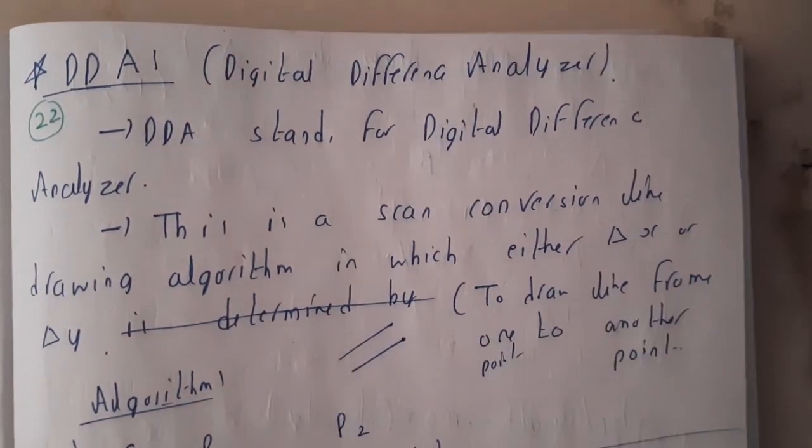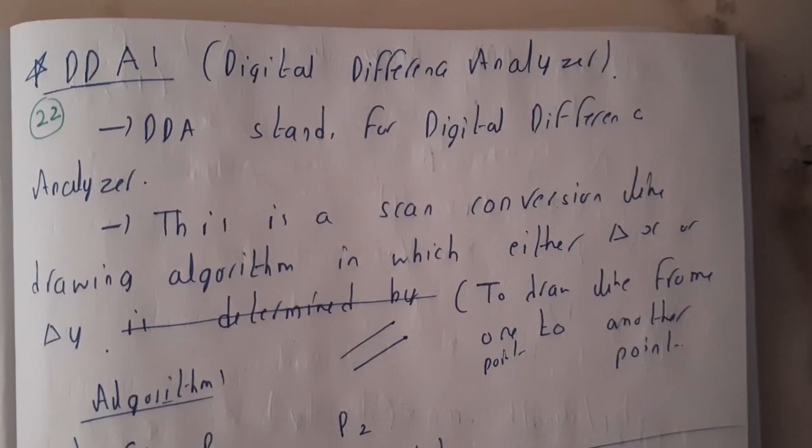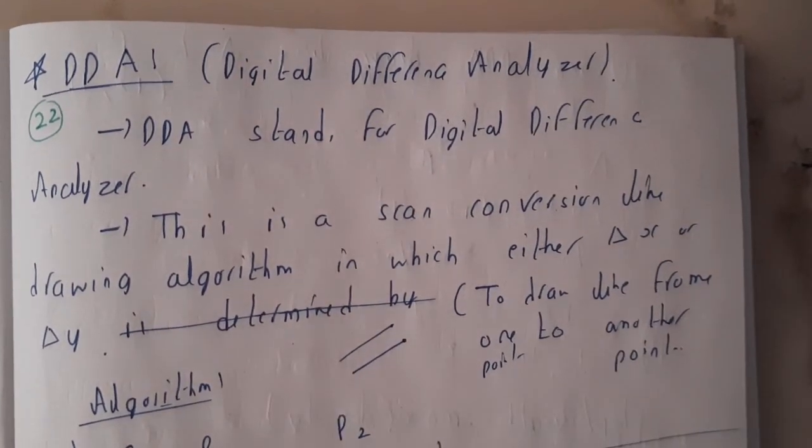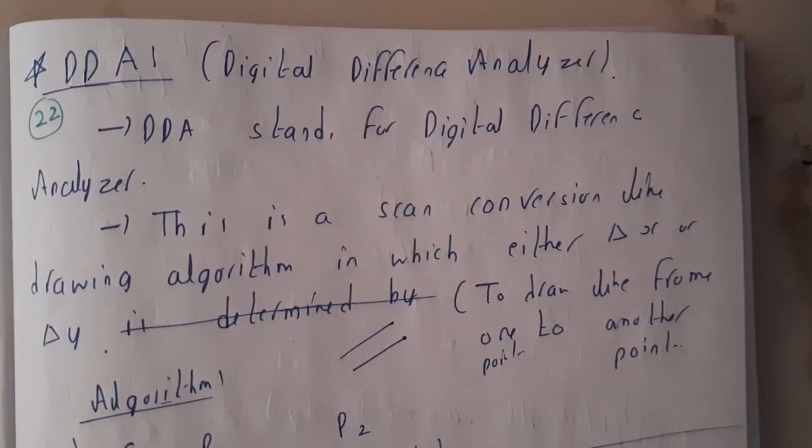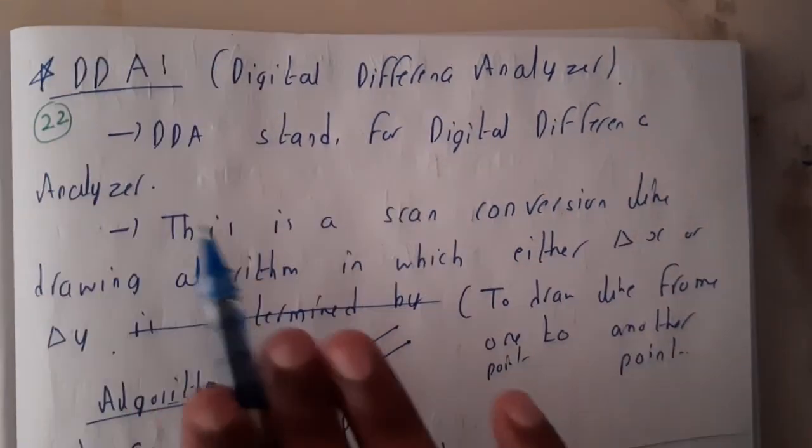For drawing the lines we will be using this algorithm. This is also a mathematical algorithm. I'll be just explaining you in terms of words, after that we will be going through a small problem so that we will be having a clear idea.